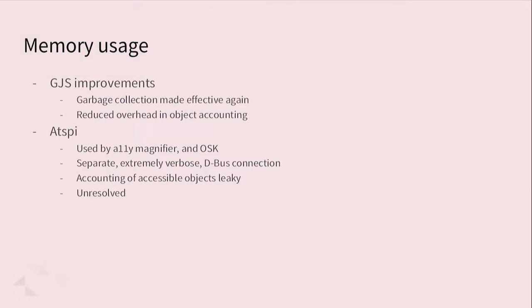There have been some improvements around memory usage, mostly in GJS. The garbage collector was made effective again. We couldn't pinpoint the exact time when things started going wrong, but what happened is the garbage collector did a very superficial pass over objects — it destroyed only the topmost objects it could, but that couldn't cascade. Objects that could keep other objects alive would stay until the next garbage collection cycle, which could happen eventually. Now it's been made much more thorough so it actually cascades over the objects that need destroying.